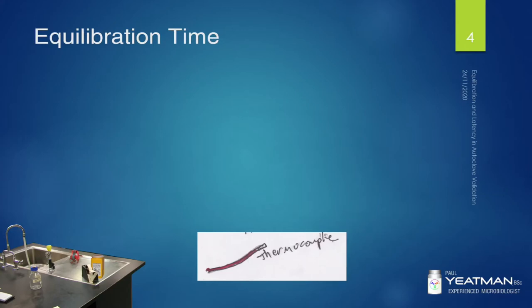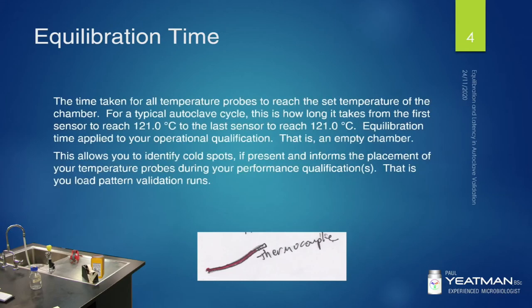So let's get into equilibration time. This is the time taken for all temperature probes to reach the set temperature of the chamber — so for a typical autoclave cycle, that's how long it takes to reach the 121 degrees Celsius required for your kill cycle. This applies during your operational qualification, so when the autoclave is empty. That allows you to identify cold spots, and if they're present it informs the placement of your temperature probes during your performance qualification.